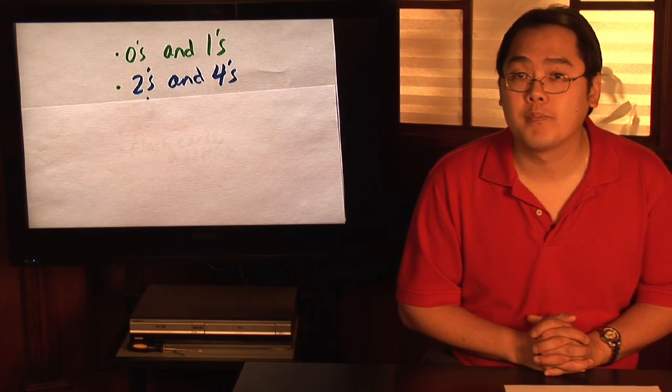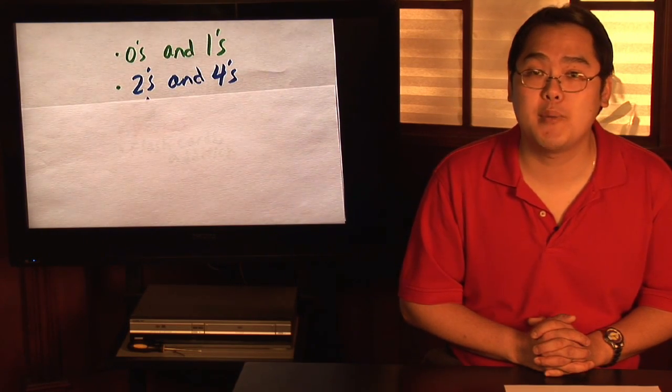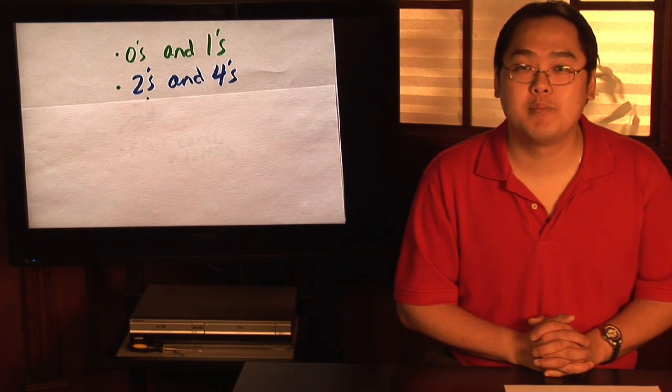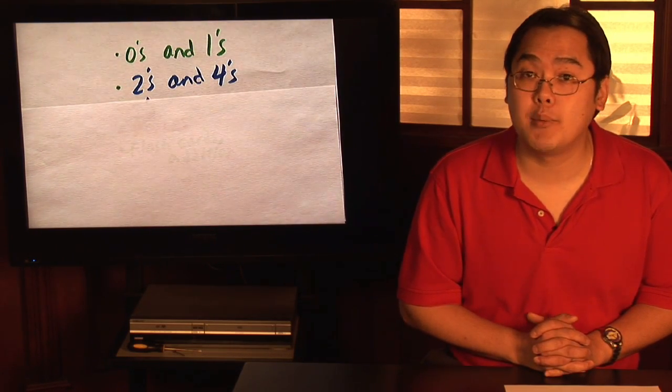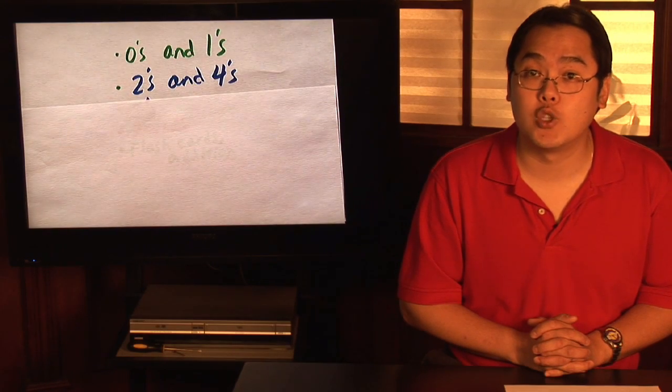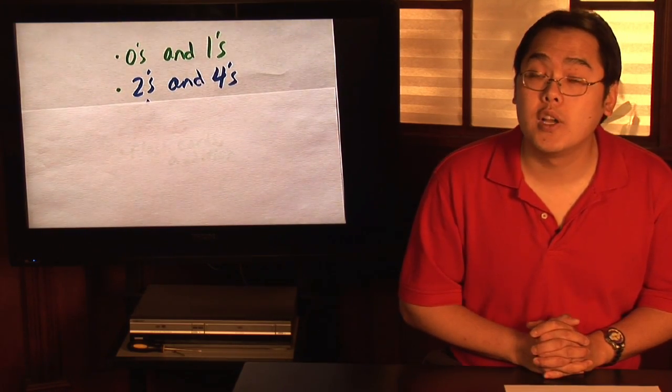And with multiplying by four, think about doubling, doubling. In other words, double doubling. If you want to multiply six times four, think about six times two first, which is twelve, and then double that answer again. And twelve and twelve is going to give you twenty-four. So six times four is going to give you twenty-four.